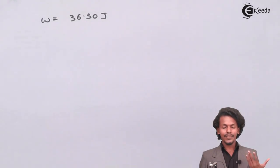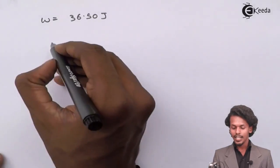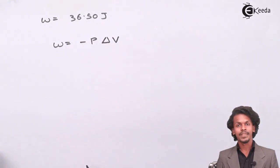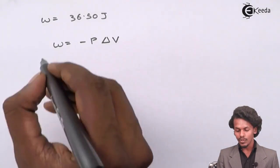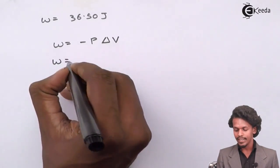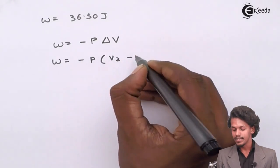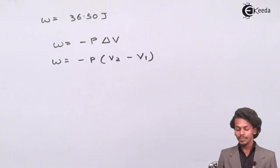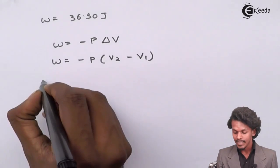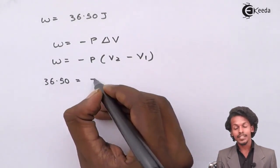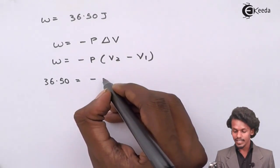Since we know that the formula is W = -PΔV, and the W value is already given, we could write the value of ΔV as V₂ - V₁. So 36.50 joules equals -P, the pressure is 1.216×10².